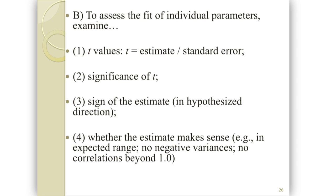There's a sign attached to those estimates — we want to know if it's in the right direction. A couple of times a year I'll be working with someone who's excited about a parameter that's significantly different from zero, but it's significant in the wrong direction. That's the worst possible result. It would be better if it were not significant. Your hypothesis has to include the expected direction of the relationship. And then whether the estimate makes sense substantively.